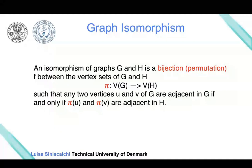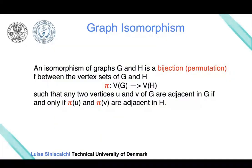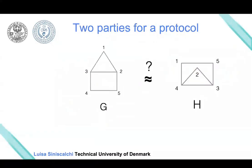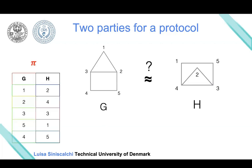Let's see in more detail a simple example of what graph isomorphism is. Here we have two graphs, G and H, and we would like to know if they are isomorphic. This means there exists a permutation that maps each node of G to a node of H while maintaining the adjacency between each pair of nodes.